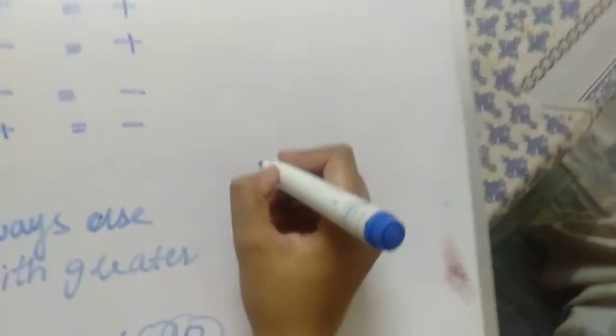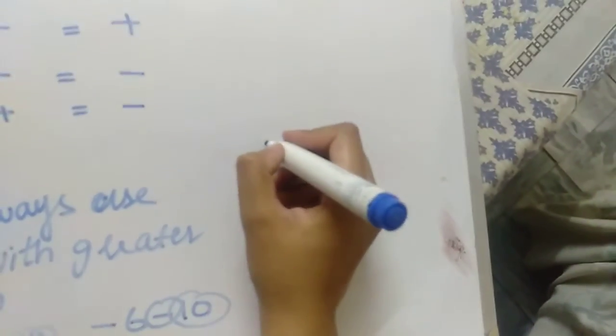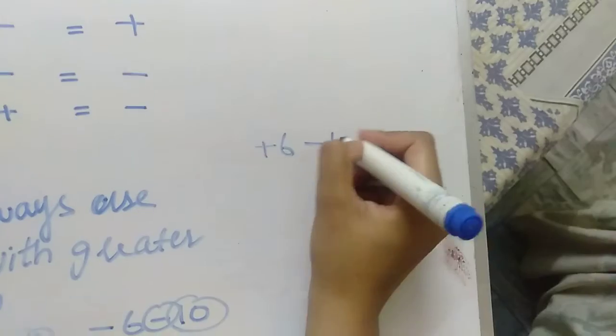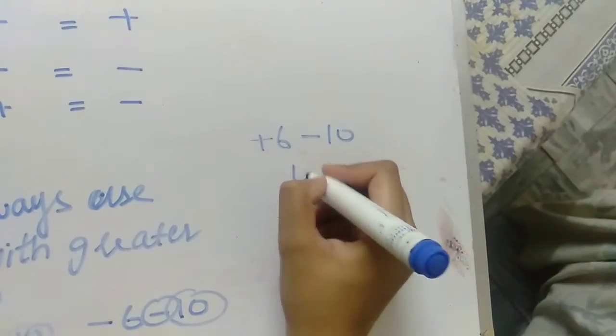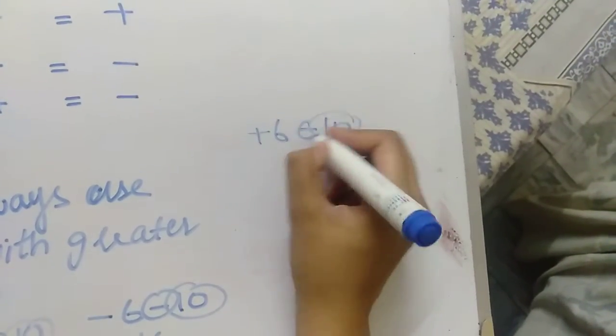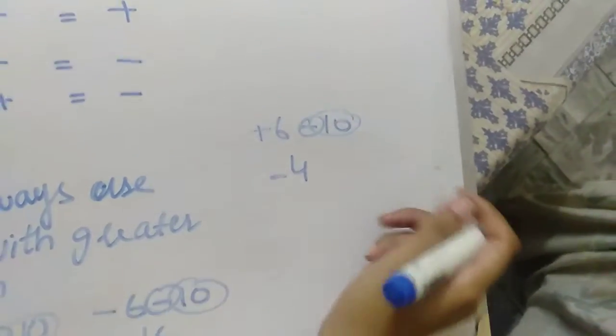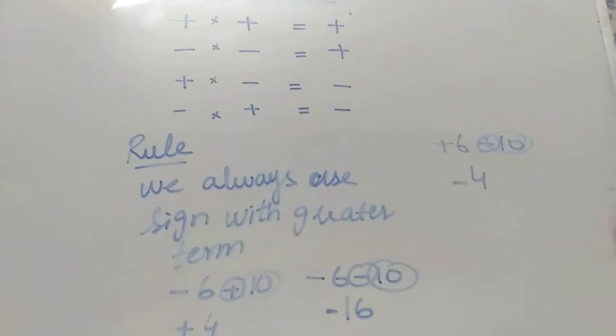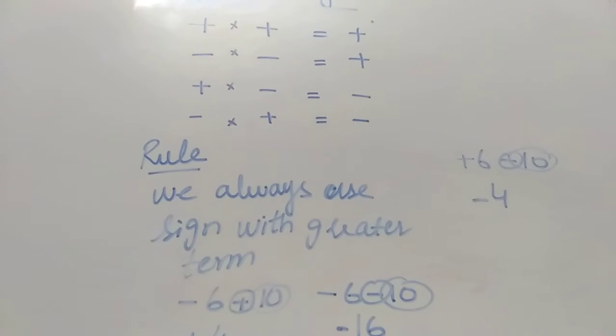For example if we have plus 6 and minus 10, we subtract it and with the bigger term being minus it will be minus 4. So we will use the sign with the bigger term.